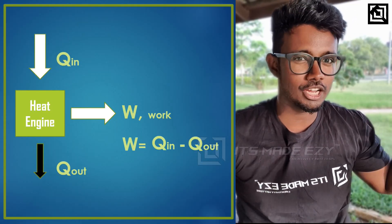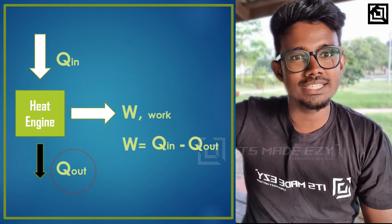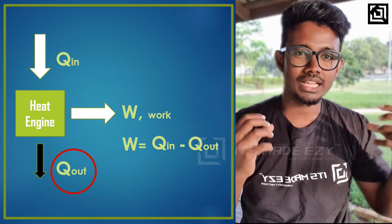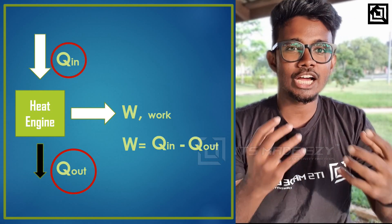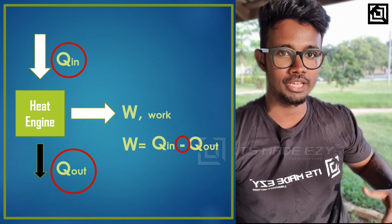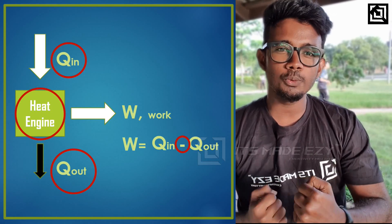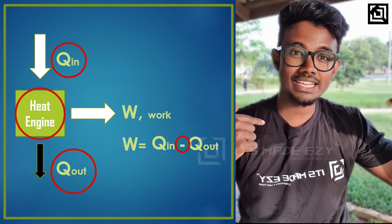For example, if we give an energy drink before going to the gym, that drink gives energy as input. When we do heavy workouts, we also generate heat — that heat is the Q_out, the waste energy. Even if I use 100% of the energy drink, I cannot get 100% workout output because there is always some heat loss through the body. This body analogy represents the heat engine: W is the useful output and Q_out is the heat energy lost.